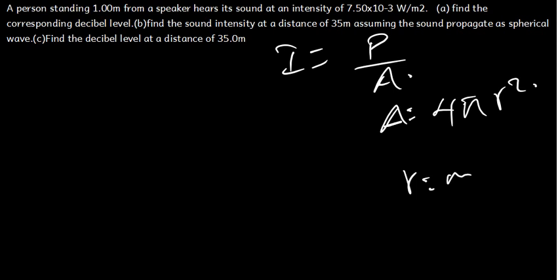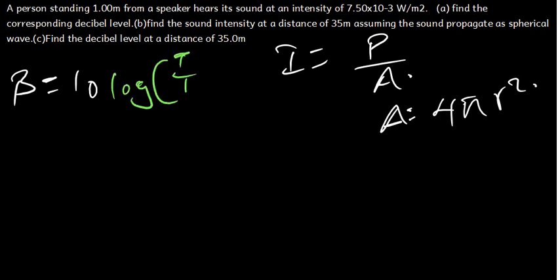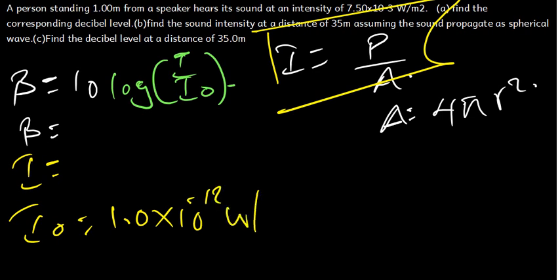R is in meters, so R is the same as the distance. When we talk about the decibel level, represented by beta, it is given by 10 log of the intensity divided by the intensity constant I₀. The I₀ is the constant equal to 1.0 times 10 raised to the power negative 12 watts per square meter. This is very important.